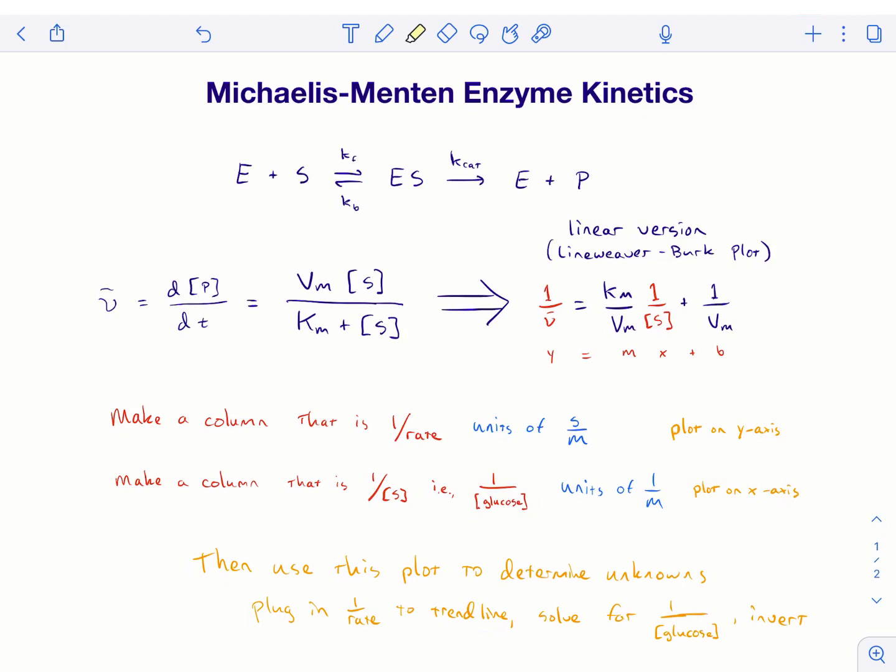And then, you'll get, hopefully, something that approaches a straight line. You can fit a trend line to it, just like normal. And then, you can plug in your y-values of your unknowns. Which, you'll have had to do the previous calculation on that, to turn it from a current into a reaction rate. And then, you take the inverse of those, plug those in as y. And then, you solve for x using your trend line equation. X comes out as inverse glucose concentration in one over molar. So, then, you take one over that, you un-invert it. And then, you get your concentration of glucose in your unknowns.